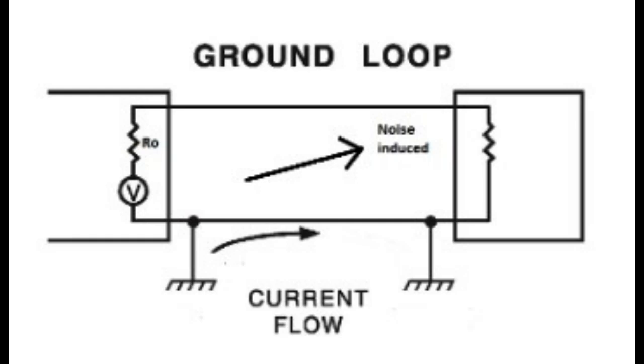Ground loop is one of the common problems in the PCB. Ground loop occurs due to the unintended potential difference between the various ground points in the design.